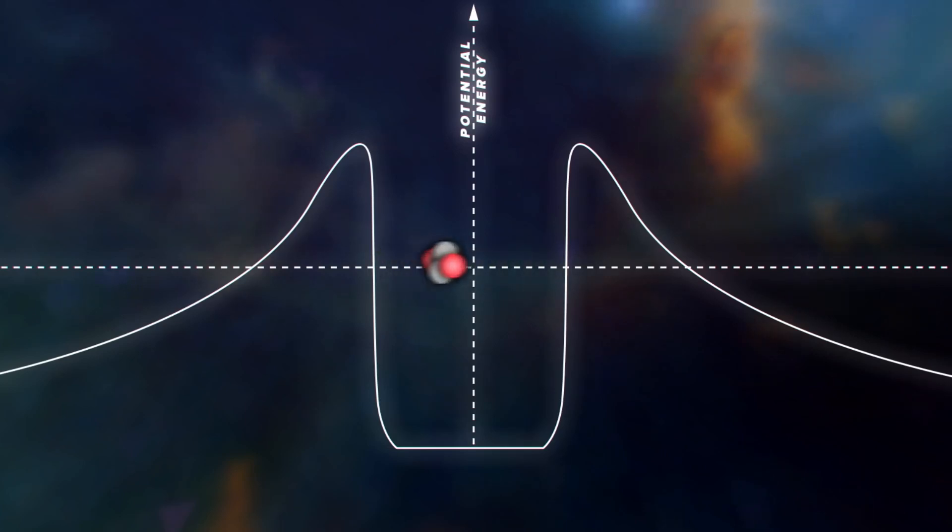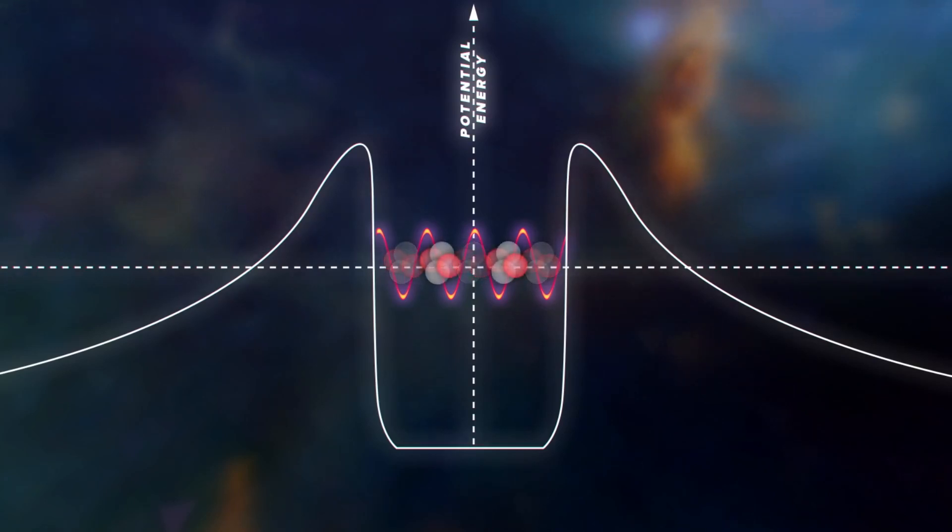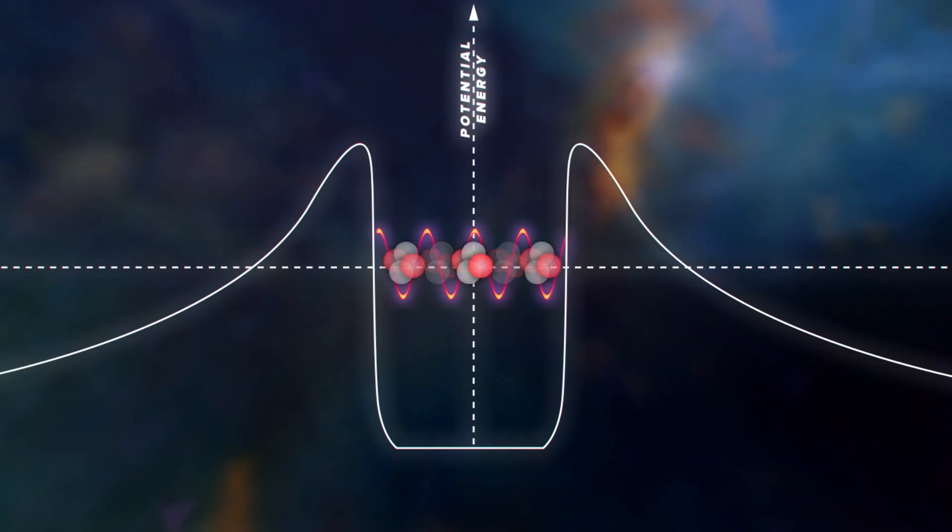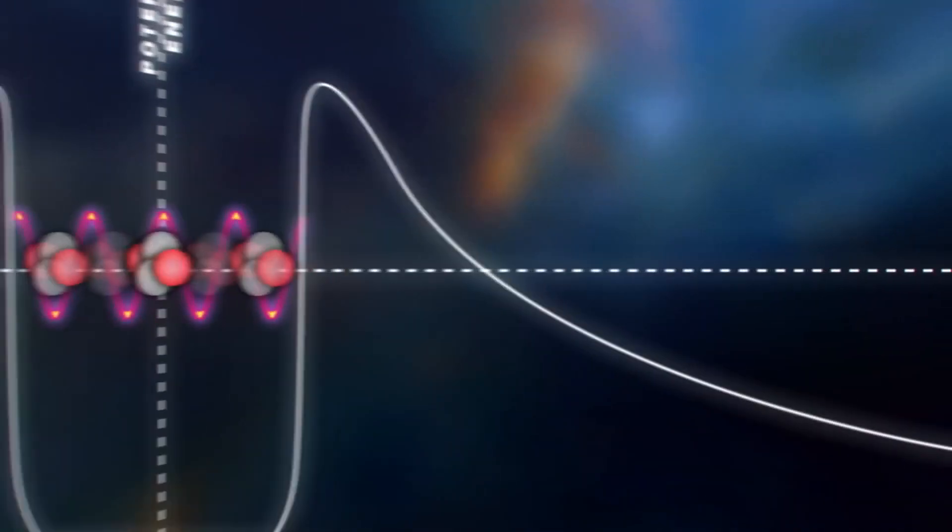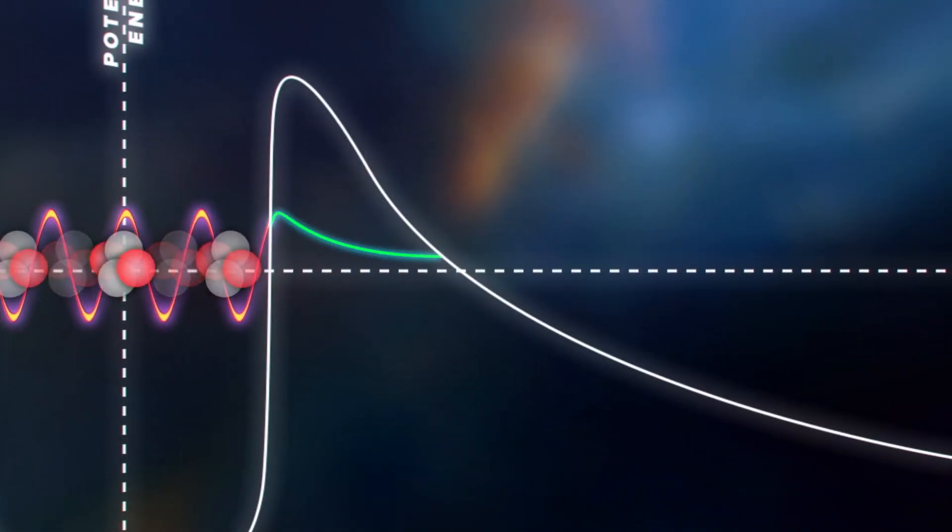But quantum objects aren't at all like balls. Their positions are not well defined. As an alpha particle approaches the force barrier of the nucleus, its wave packet is reflected backwards, usually. See, that wave packet describes a range of possible locations for the approaching particle. But that possibility space does not end suddenly at the force barrier. Instead, it drops off quickly, exponentially, through the steep walls. However, it never quite reaches zero.